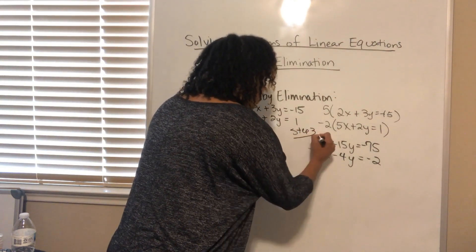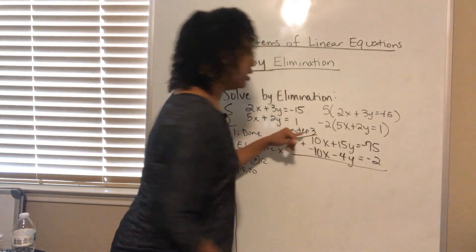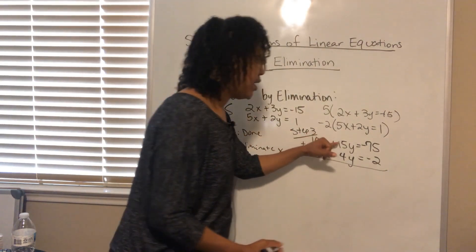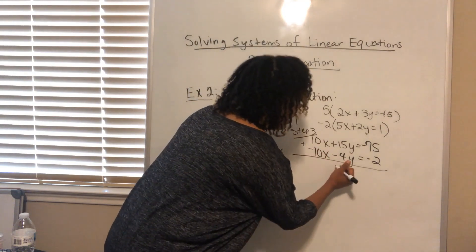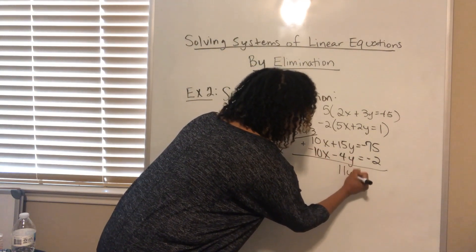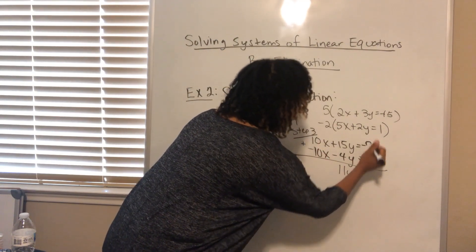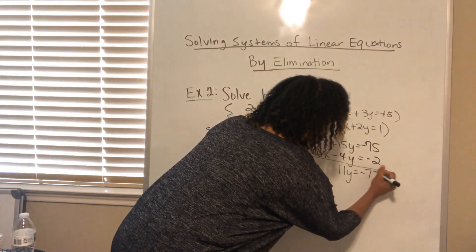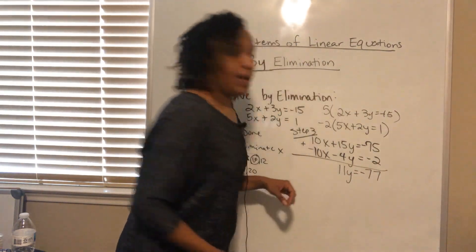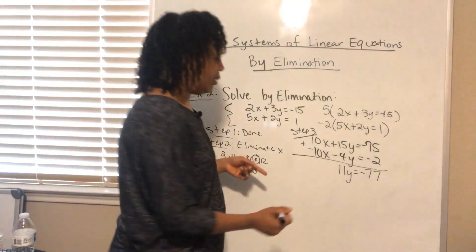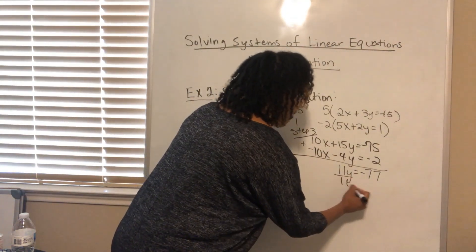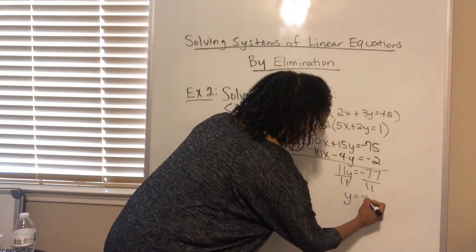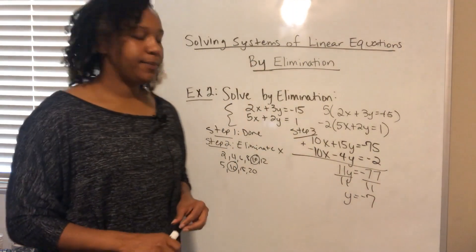For step three, I add the two equations together. The tens cancel, leaving 15y minus 4y which is 11y, and negative 75 minus 2 which is negative 77. So 11y equals negative 77. Dividing both sides by 11 gives y equals negative 7.